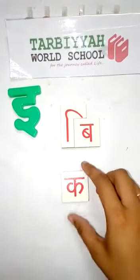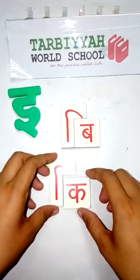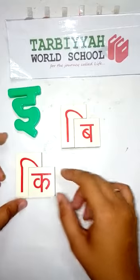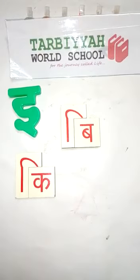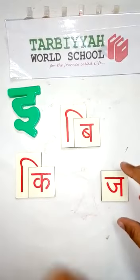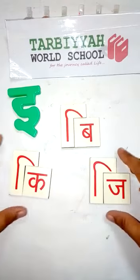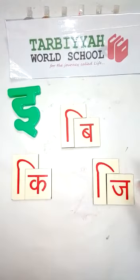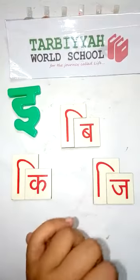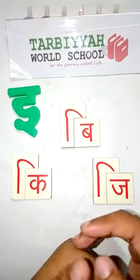Now see which alphabet is this? Ka. And if we add the matra of Choti E, it becomes Ki. Okay. Now see one more alphabet. Which letter is this? Ja. And if we add the matra of Choti E, it becomes Ji. So, you have understood? If we add the matra of E to any vanjan, it produces the sound E.